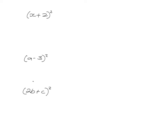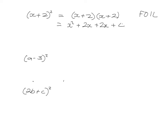Here are the last three to try — pause the video. For the first one, (x+2) squared means (x+2) multiplied by itself, so we foil: First — x times x is x squared. Outside — x times 2 is 2x. Inside — 2 times x is 2x. Last — 2 times 2 is 4. Combining: x squared plus 4x plus 4.